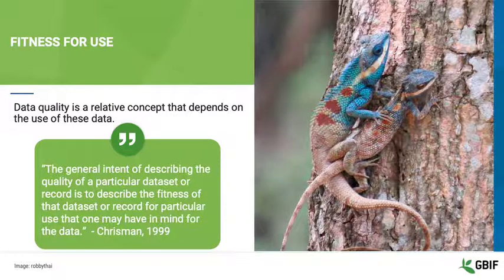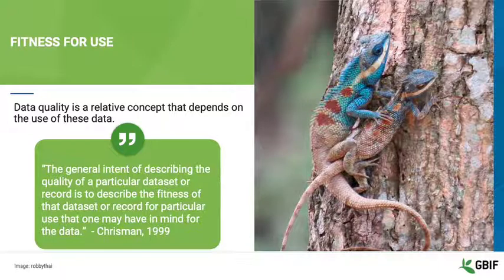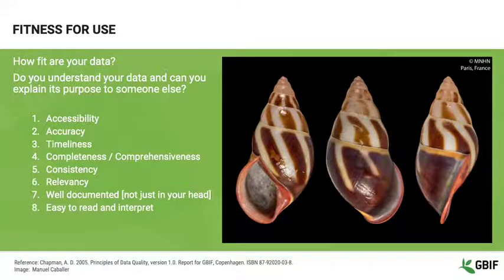For example, for one person, data identified to the level of genus may be sufficient to run predictive models of ecological niches. For a person studying a particular taxon, that same genus-level data will be much less useful than more detailed occurrences with subspecies information. So what is fitness for use and how does it relate to data?